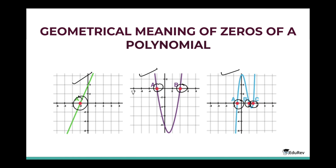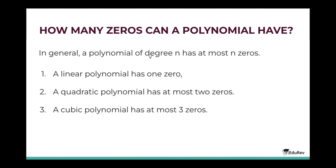But I have a question — how many zeros can a polynomial have? In general, a polynomial of degree n has at most n zeros. A linear polynomial has one zero, a quadratic polynomial has at most two zeros, and a cubic polynomial has at most three zeros.